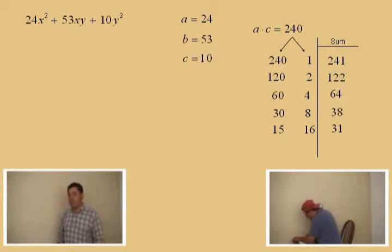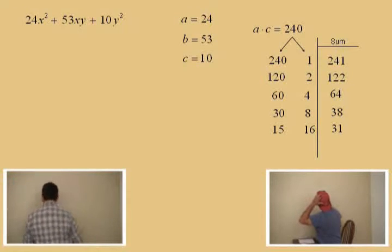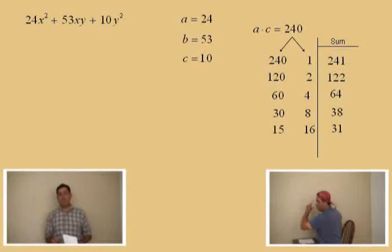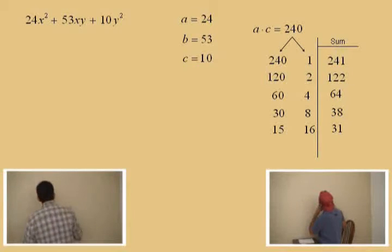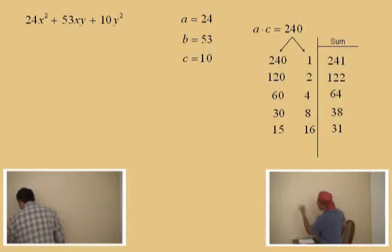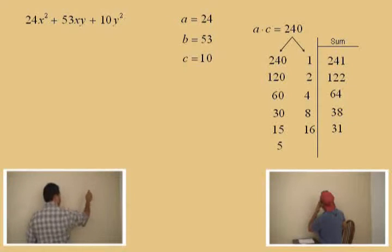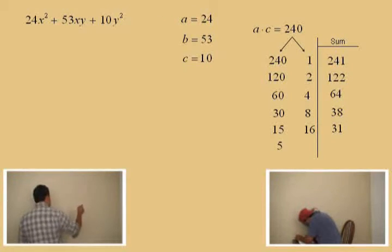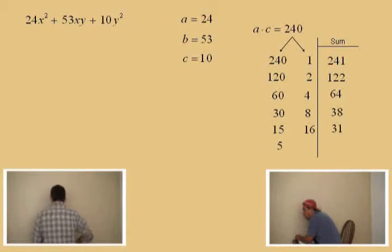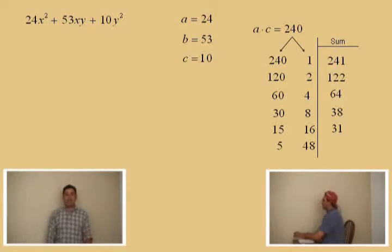Now, notice here. We have a 15 here. We cannot take half of 15. So, what we're going to do is we're not going to divide by 2 now. We're going to divide by the next larger number, which is 3. So, Charlie, what's 15 divided by 3? 5. Now, since we divided the 15 by 3, we have to multiply the 16 by 3. And now, Charlie, what's 16 times 3? That's a tough one. 48. That was a tough one.